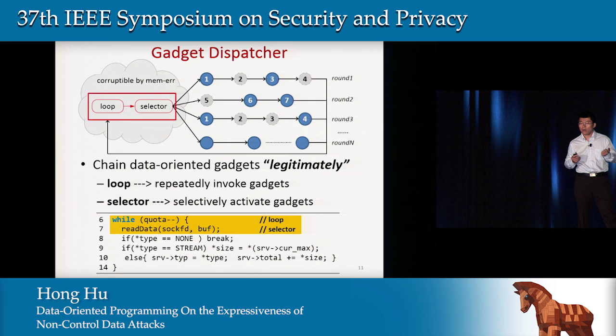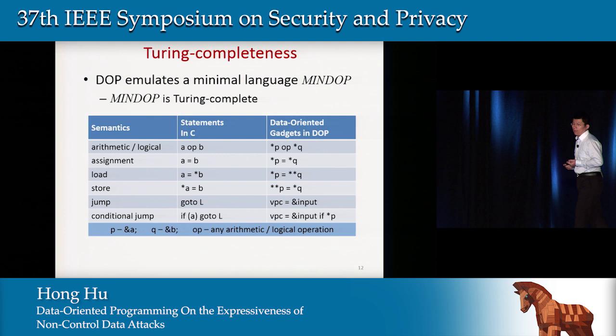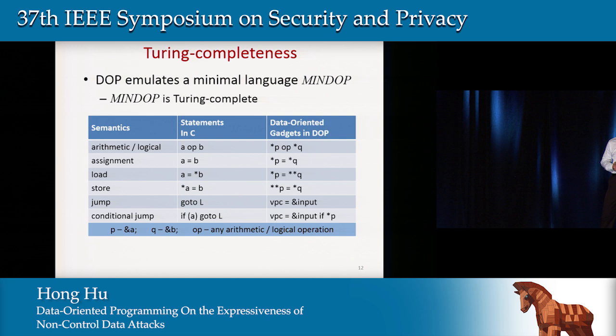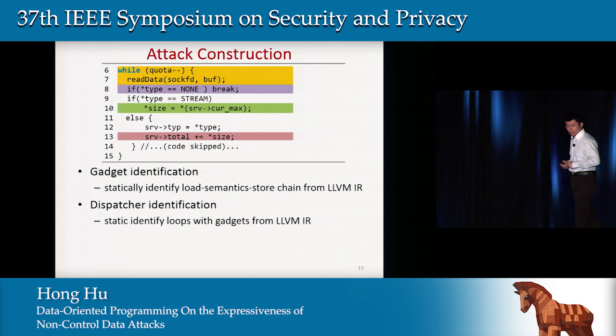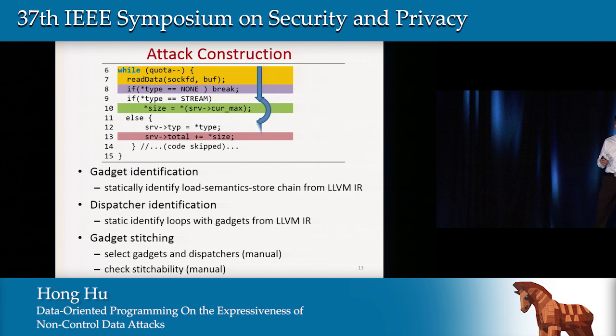Once we have gadgets and dispatchers, DOP can emulate a minimal language we call minDOP. In our paper, we prove that minDOP is a Turing-complete language, meaning that if we can find enough gadgets and dispatchers from a vulnerable program, we can build Turing-complete attacks. The steps are: compile source code into LLVM IR, do static analysis on the LLVM IR to identify load semantics and store operation chains as gadget candidates, identify loops with interesting gadgets as dispatcher candidates, and then manually select gadgets and dispatchers to build attacks — though we plan to make this automatic.